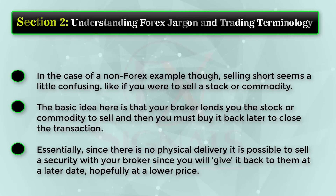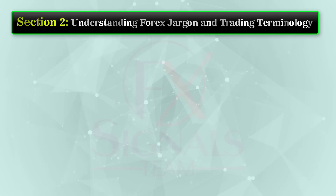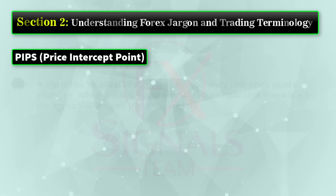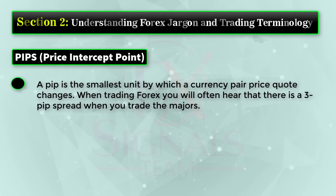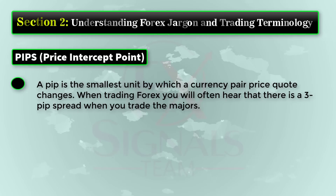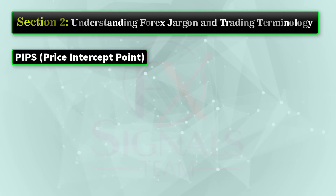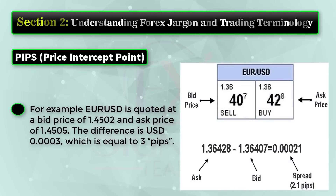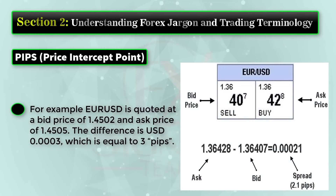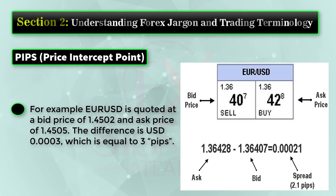A pip — price intercept point — is the smallest unit by which a currency pair price quote changes. When trading Forex, you will often hear that there is a three-pip spread when you trade the majors. This spread is revealed when you compare the bid and the ask price. For example, EUR/USD is quoted at a bid price of 1.4502 and ask price of 1.4505. The difference is 0.0003 US dollars, which is equal to three pips.